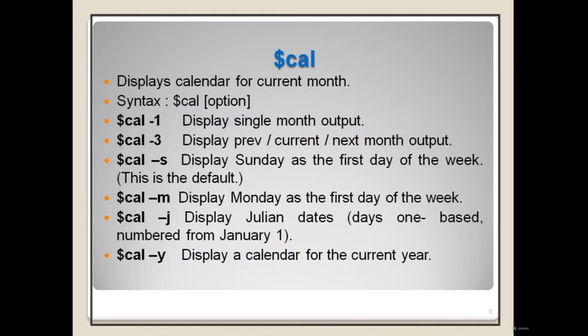The next command is the cal command. It displays the calendar for the current month. Syntax is: cal [option]. Options include: 'cal -1' displays single month output, 'cal -3' displays previous, current, and next month output, 'cal -s' displays Sunday as the first day of the week, 'cal -m' displays Monday as the first day, 'cal -j' displays Julian dates, and 'cal -y' displays the calendar for the current year.